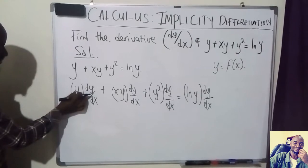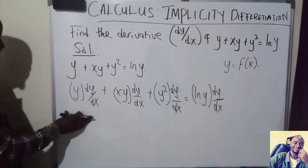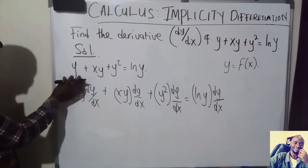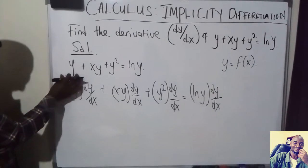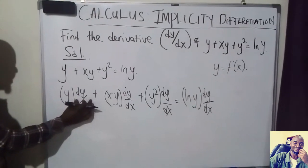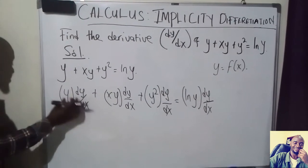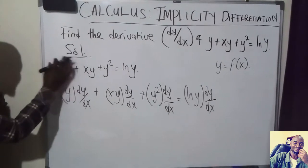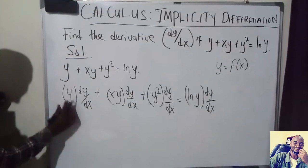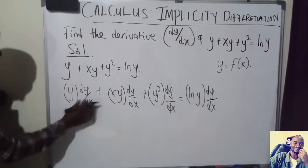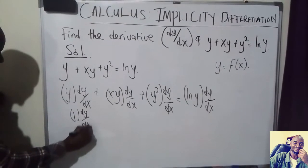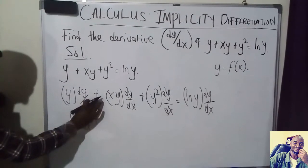Because we differentiated y, whenever we differentiate y with respect to x, we differentiate with respect to y but we attach dy over dx. So the derivative of this term with respect to y is 1, and we attach dy over dx. So we're going to have 1 times dy over dx.